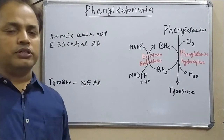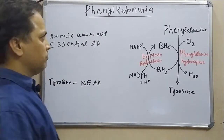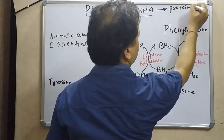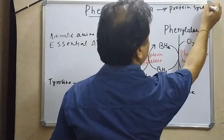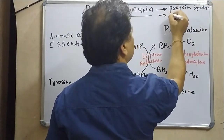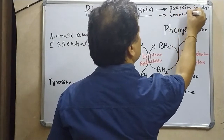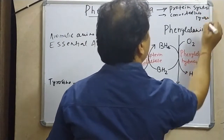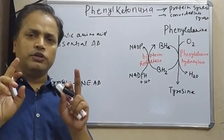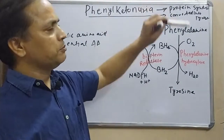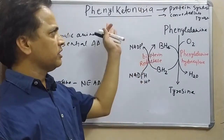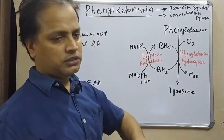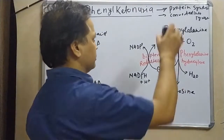The functions of phenylalanine in our body are only two: first, it participates in protein synthesis, and second, it is converted into tyrosine. Phenylalanine performs only these two functions. The conversion of phenylalanine to tyrosine is the key metabolic pathway we need to understand.